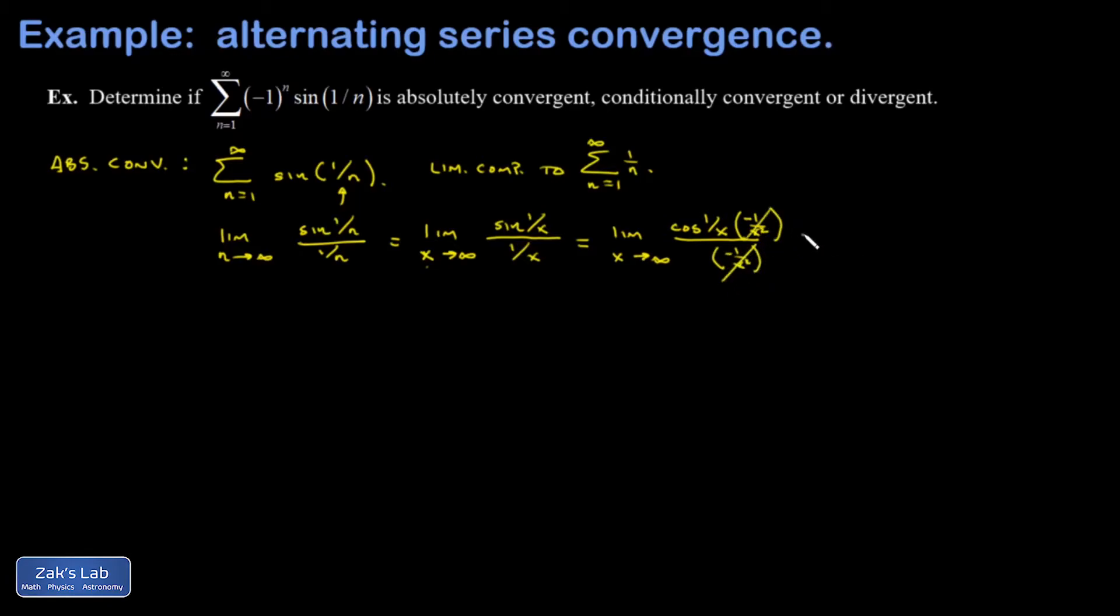This is a classic trick. And I end up with the limit as x goes to infinity, cosine 1 over x. 1 over x gets close to 0, so the cosine is getting close to 1.